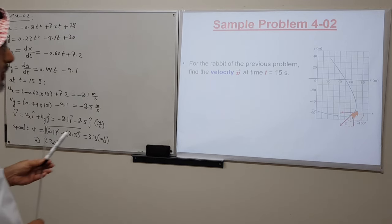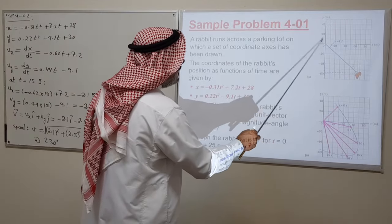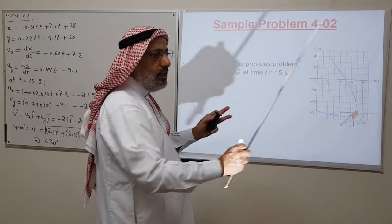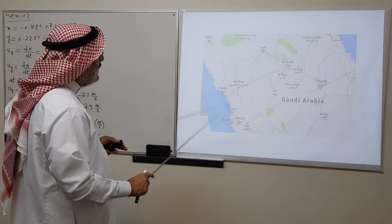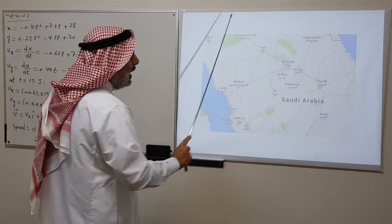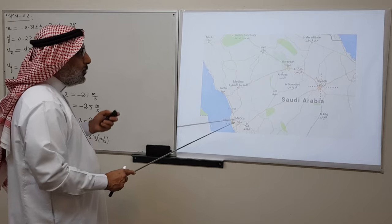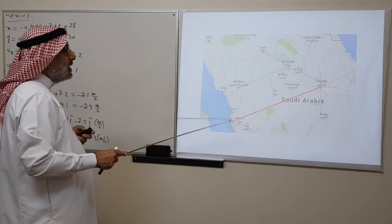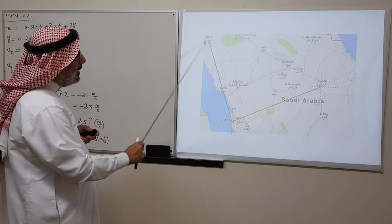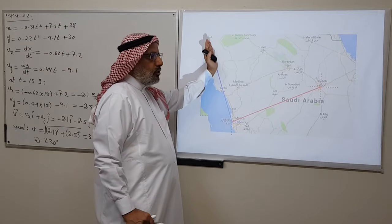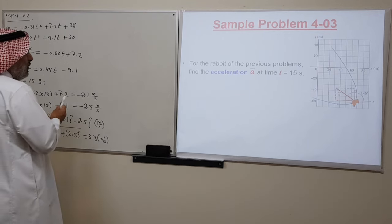This illustrates that position and velocity are completely independent vectors. As an analogy, consider a person traveling from Jeddah to Tabuk with Riyadh as the origin: the person's position vector places them in the third quadrant, but they are moving toward the second quadrant — that's where the velocity points. Let's go back to the rabbit and find its acceleration.